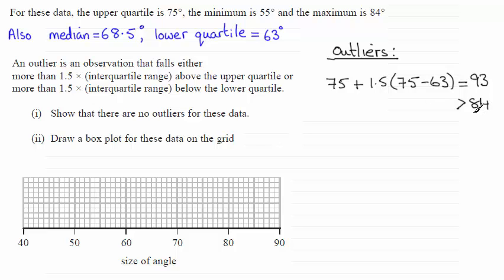Now we're going to look towards the lower quartile. So for that one when we're looking for outliers there we take the lower quartile which is 63 and from this we need to subtract 1.5 times the interquartile range which again is going to be 75 minus 63.